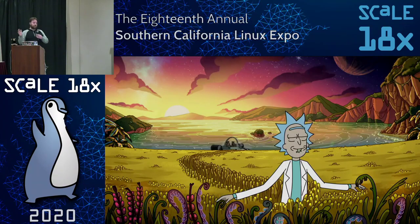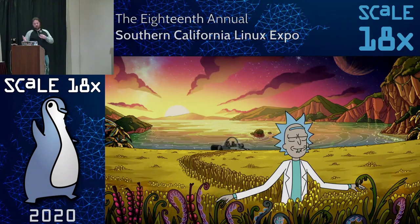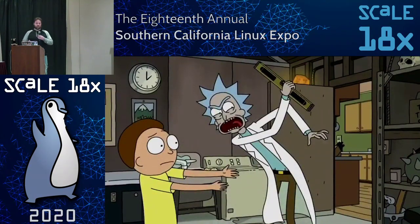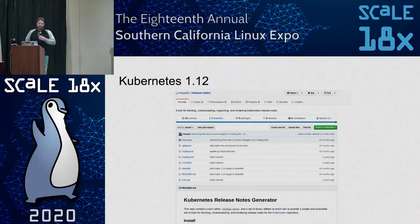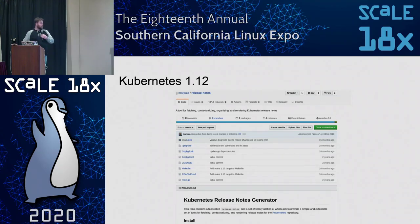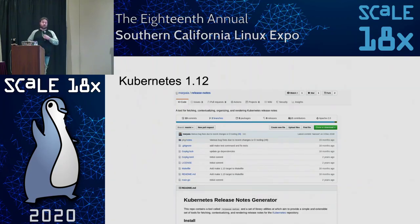Nothing really changed with release notes from 1.8 to 1.12. Release notes were in what I would consider a stable state. But as with all things, engineers have to engineer — we decided to start rewriting how we generate release notes to make it more Kubernetes-native in Golang rather than a complicated Bash script. It was incredibly stable, just very complicated.